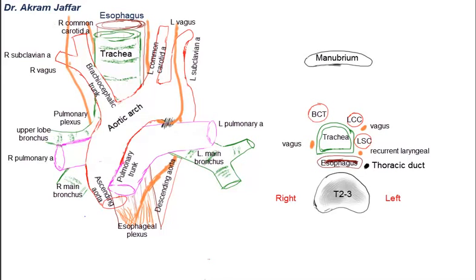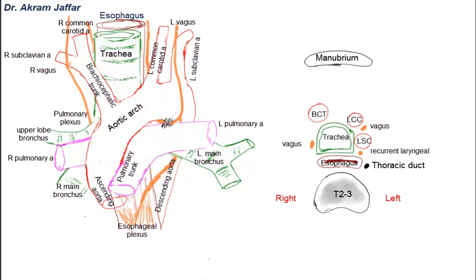One important point about the root of the lung: on the left side, the arch of the aorta hooks over the root of the left lung, while on the right side it is the arch of the azygos vein that hooks around the root of the right lung. The azygos vein is located in the inferior mediastinum, on the right side, and this is the arch of the azygos vein hooking over the root of the right lung.